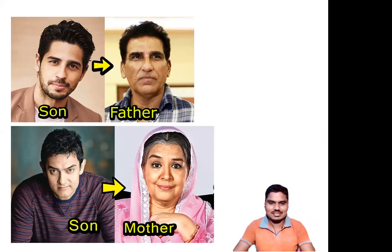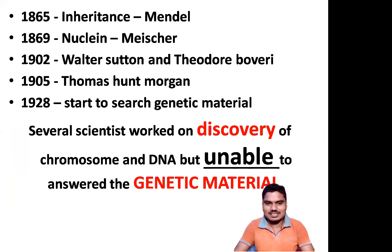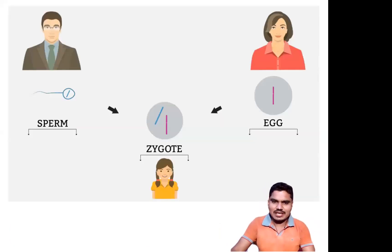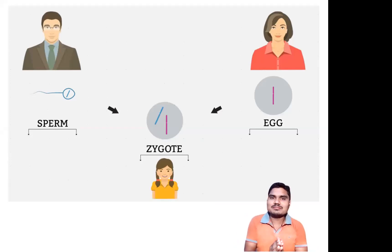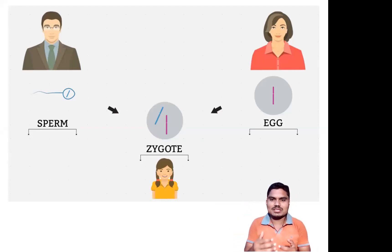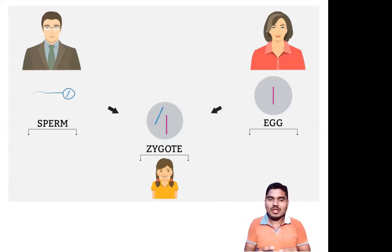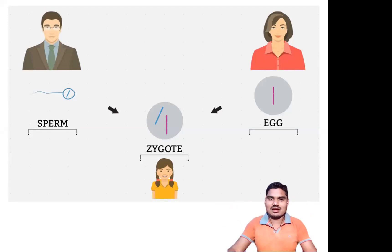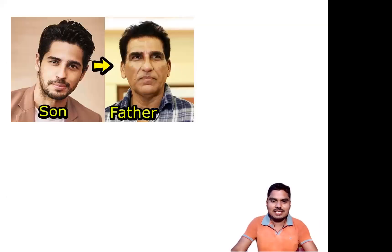This sperm cell also contains other chemicals along with the DNA molecules. The sperm cell has protein, carbohydrates, lipids, and enzymes along with the DNA molecules. Like that, the egg also contains the DNA molecule, enzymes, proteins, and some other different chemicals. The concept of whether proteins, lipids, or carbohydrates are transferred to the zygote — that was the confusion at that time. That confusion was resolved by different scientists after making their successful experiments.